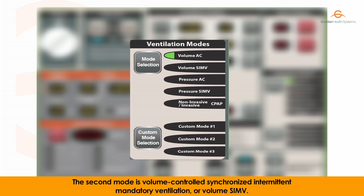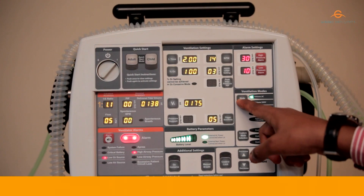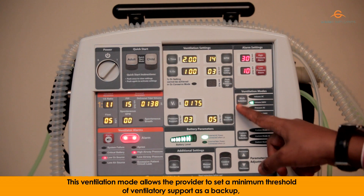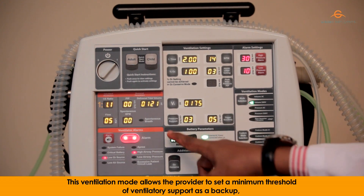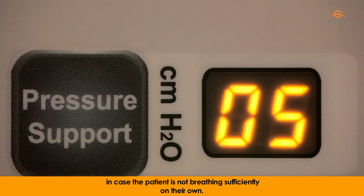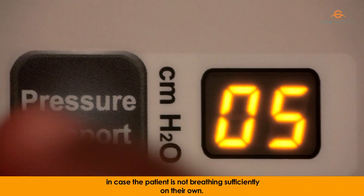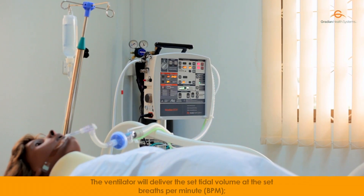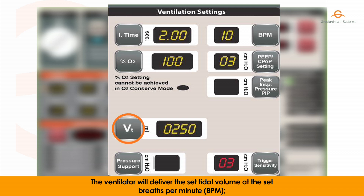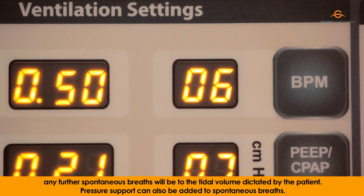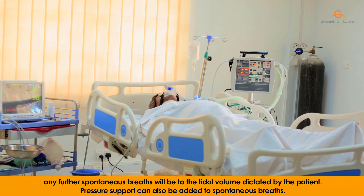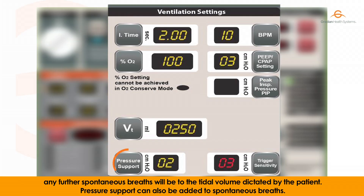The second mode is volume controlled synchronized intermittent mandatory ventilation, or volume SIMV. This ventilation mode allows the provider to set a minimum threshold of ventilatory support as a backup in case the patient is not breathing sufficiently on their own. The ventilator will deliver the set tidal volume at the set breaths per minute. Any further spontaneous breaths will be to the tidal volume dictated by the patient. Pressure support can also be added to spontaneous breaths.